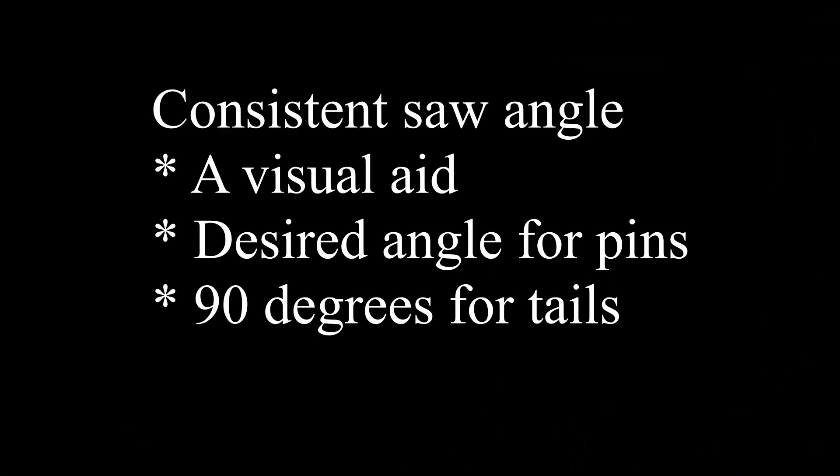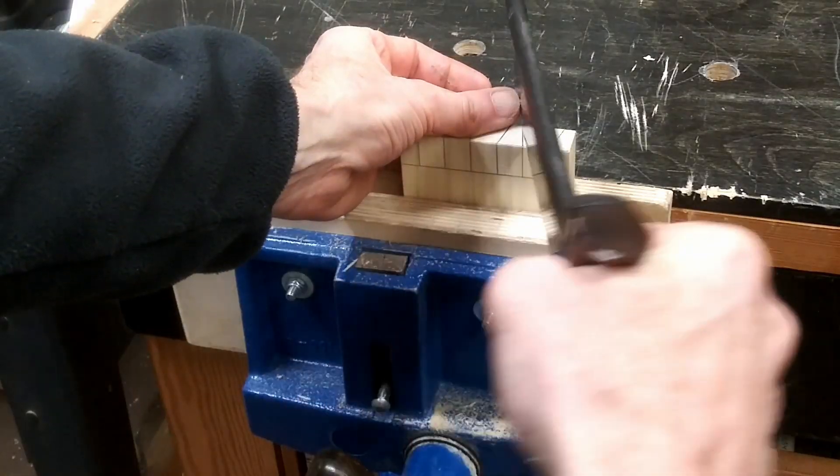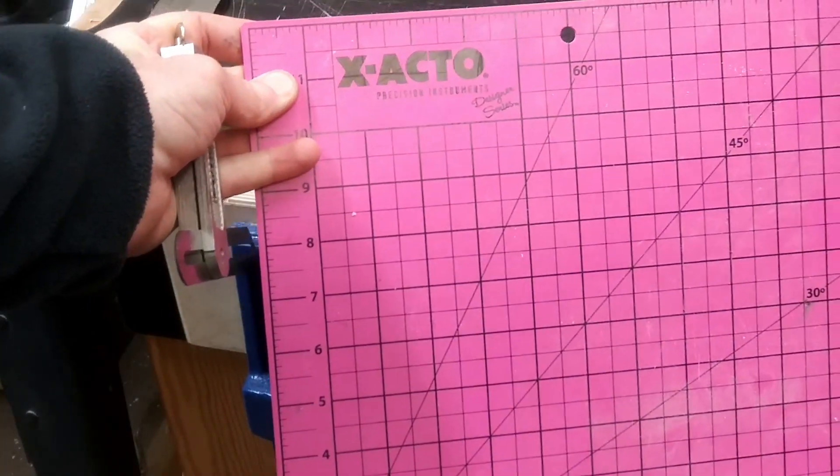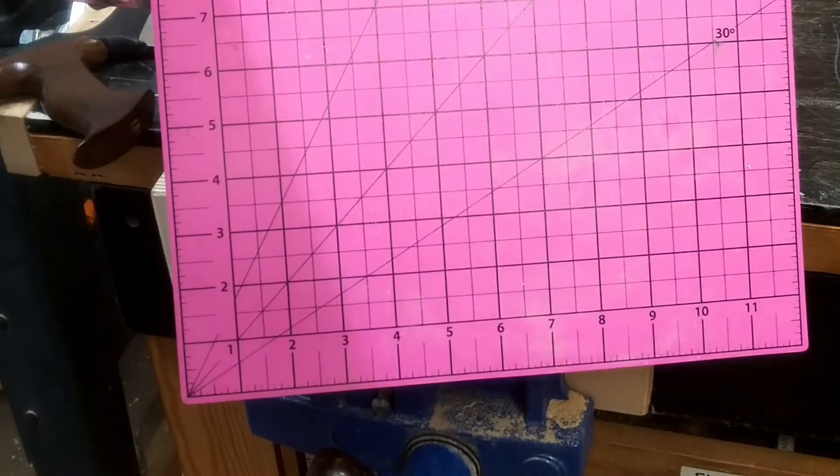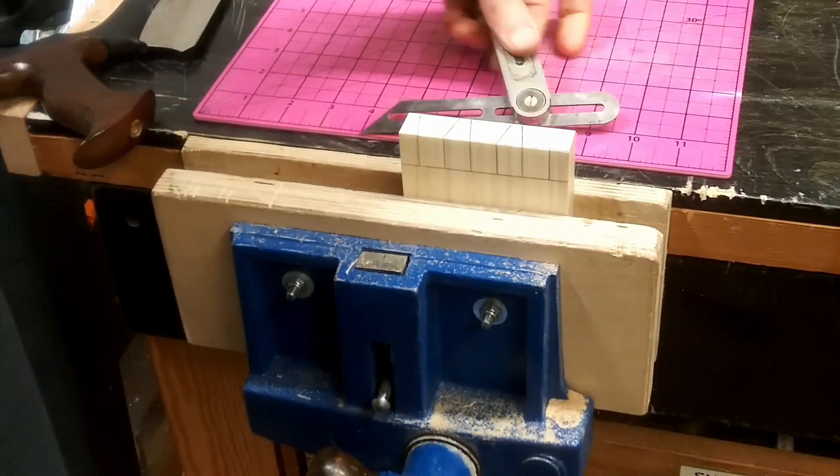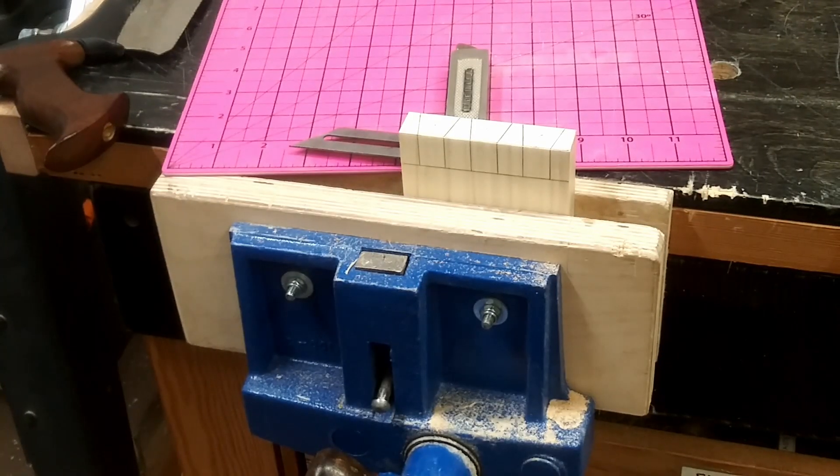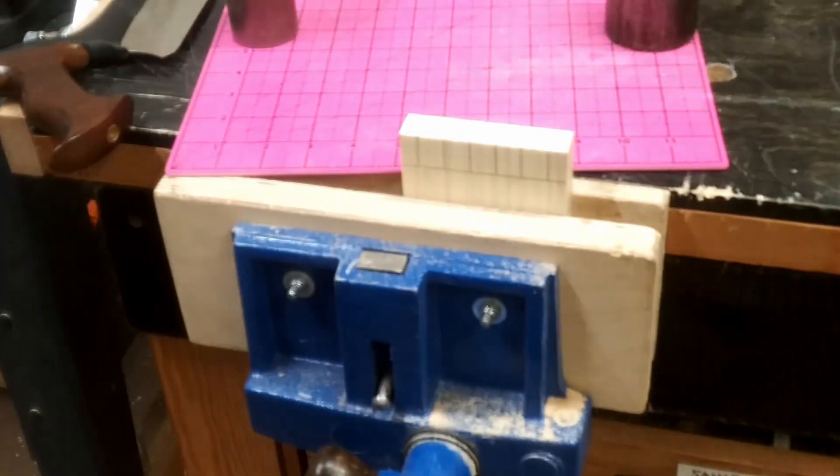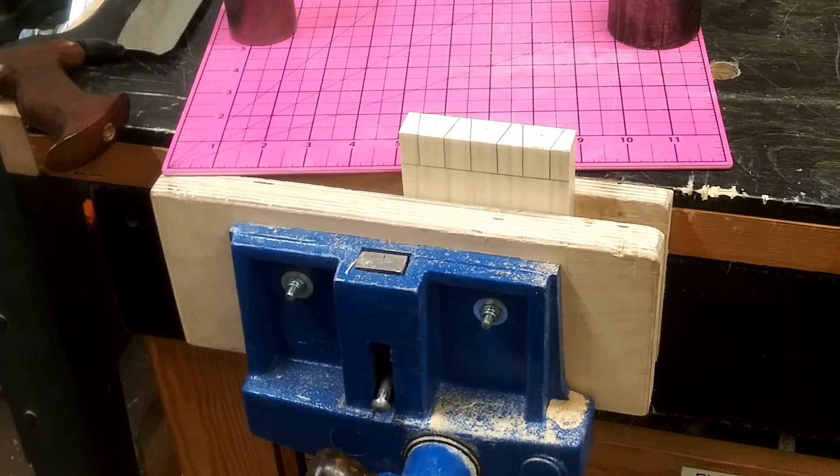Next tip is about having a consistent sawing angle. I made a visual aid for that. It's always hard to line up and stay lined up. I figured out that if I lay it behind the piece and set it with the bevel gauge and put some weight on there so it doesn't jump around, then I've got a reference that I can line my saw up on.